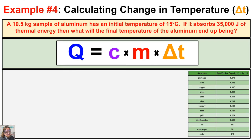Problem four: a 10.5 kilogram sample of aluminum has an initial temperature of 15 degrees Celsius. If it absorbs 35,000 joules of thermal energy, what will its final temperature be? Since we need the final temperature, we should first solve for delta T. Once we find the change in temperature, we can add it to the initial temperature to get the final answer.